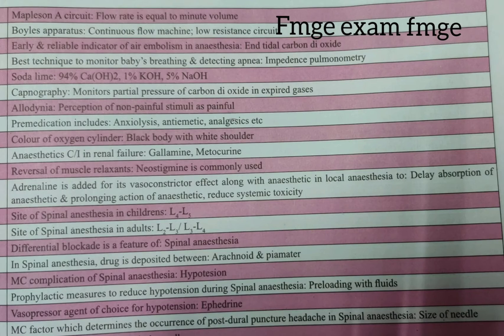Anesthesia contraindicated in renal failure includes gallamine and metocurine. Reversal of muscle relaxant — neostigmine is commonly used.